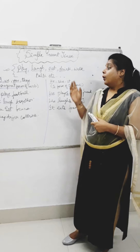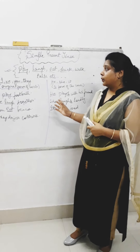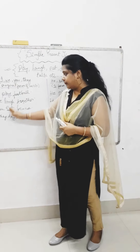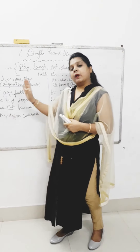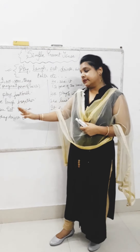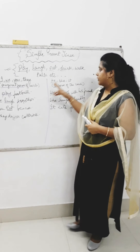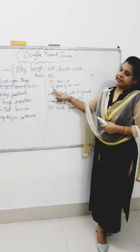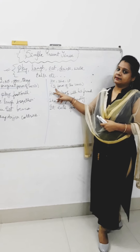So, whenever you have to write from the subject I, we, you, or they, just write the base form. Whenever you write the sentence beginning with he, she, or it, you have to add S. Nothing else.